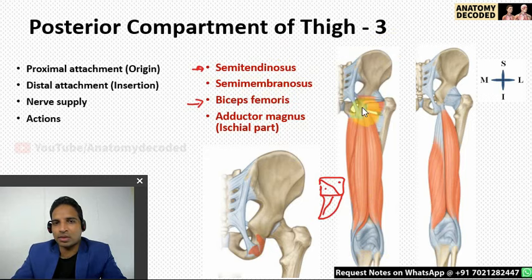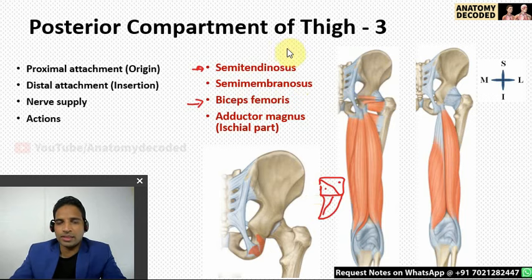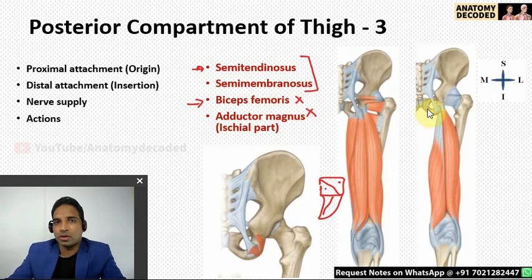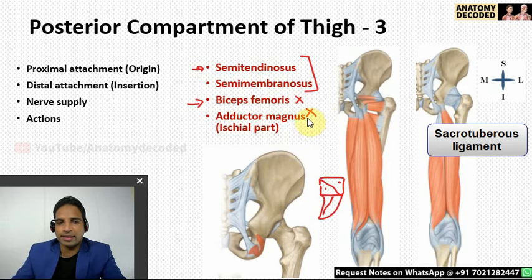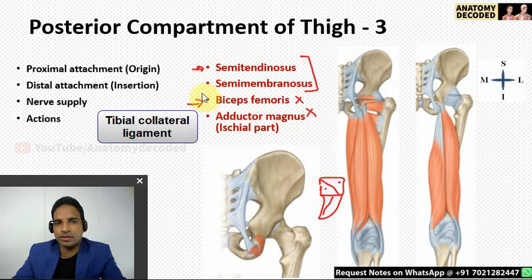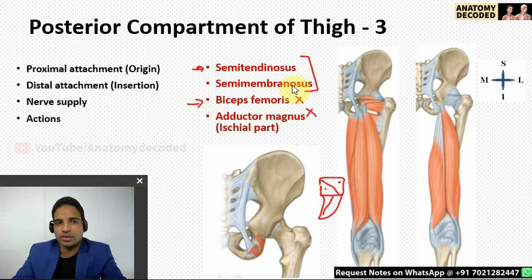For a muscle to be classified as a hamstring, it must: have proximal attachment from the ischial tuberosity, distal attachment on the tibia or fibula, nerve supply by the tibial part of the sciatic nerve, and action of extension at the hip and flexion at the knee. Semi-tendinosus and semi-membranosus are true hamstrings as they satisfy all criteria. Biceps femoris and adductor magnus are not true hamstrings — biceps femoris's proximal attachment partly involves the sacrotuberous ligament, and adductor magnus doesn't directly attach to a bone of the leg.